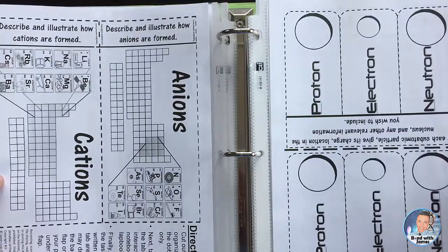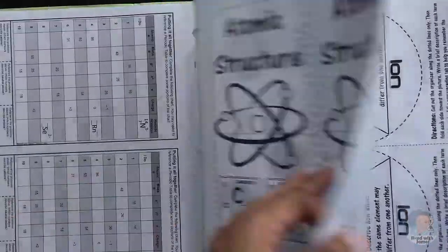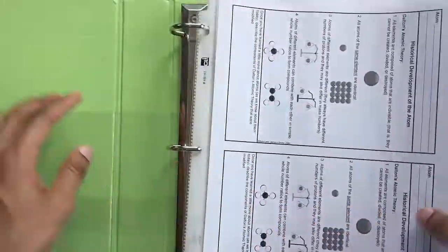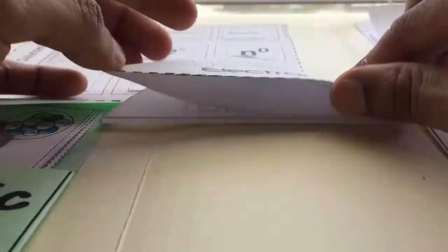Hey, this is James and this is the Atomic Structure for Chemistry Interactive Notebooks. When you open up the product, you'll notice there are these half pages, actually for all my current Chemistry Interactive Notebooks.